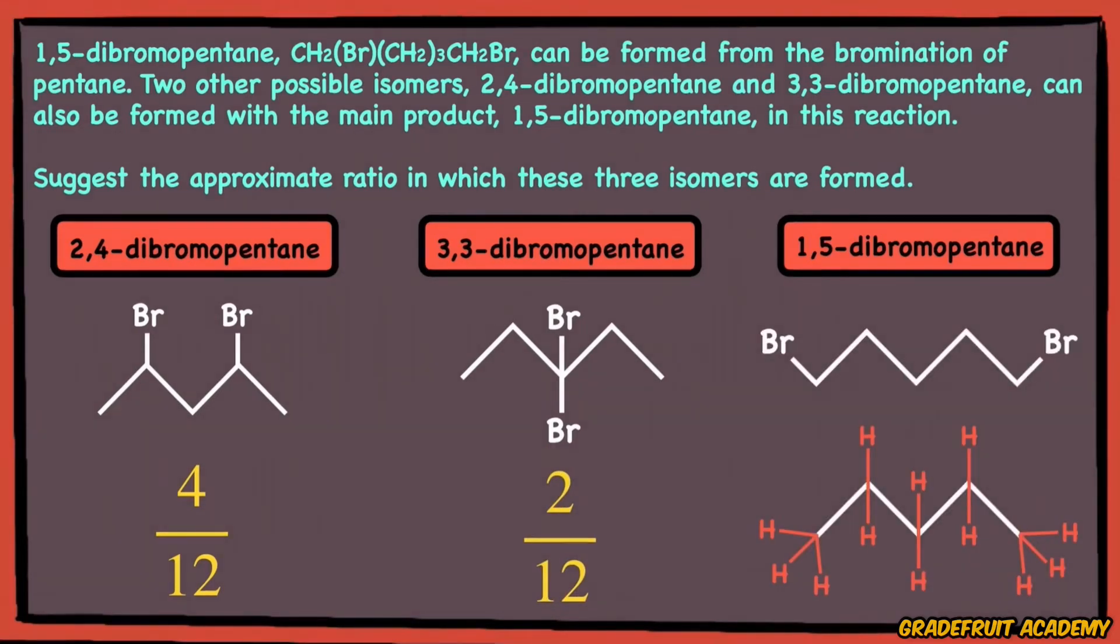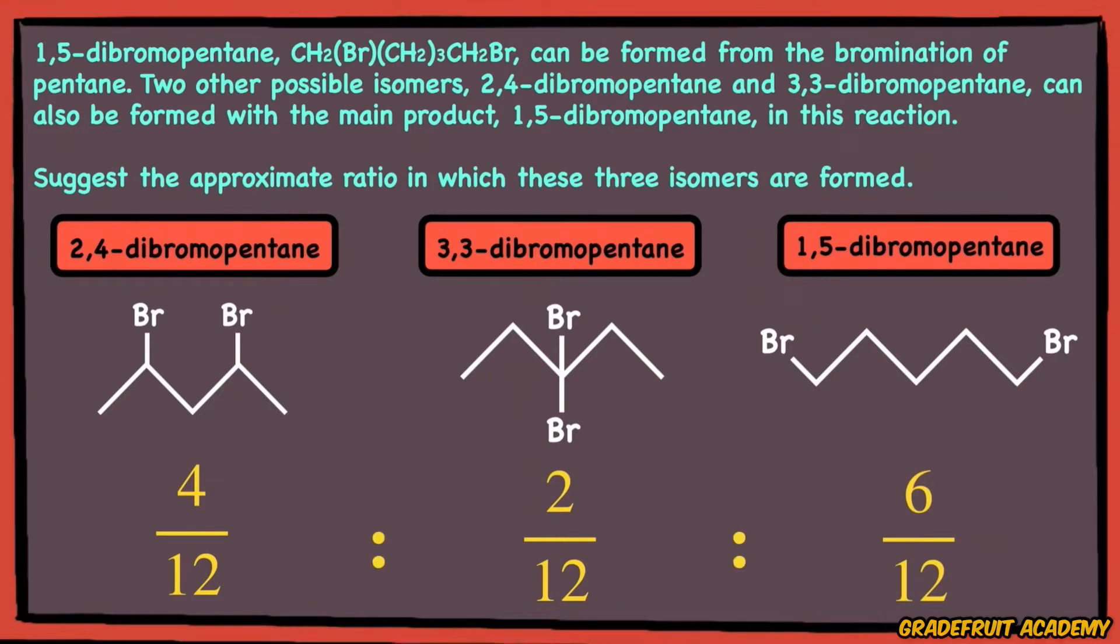Lastly, for 1,5-dibromopentane, in order for the two bromine atoms to be attached to the 1st and the 5th carbon atoms, they have 1, 2, 3, 4, 5 and 6 out of 12 hydrogen atoms to choose from. So if we were to simplify the answer, our ratio will be 2 is to 1 is to 3.